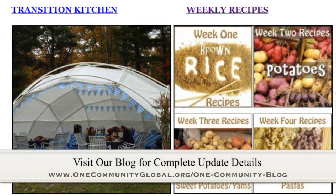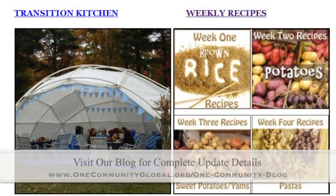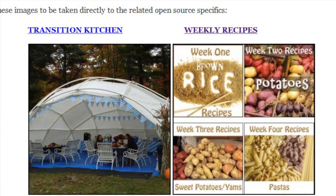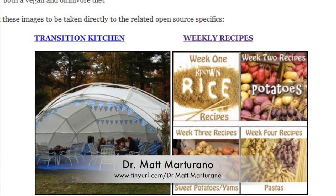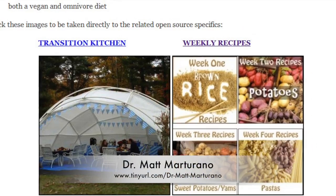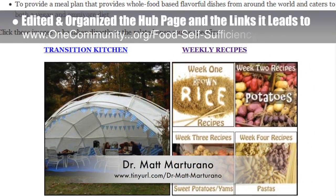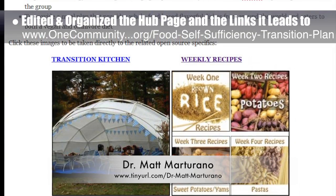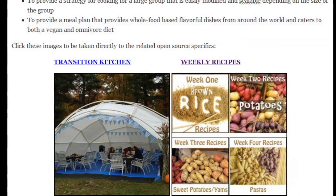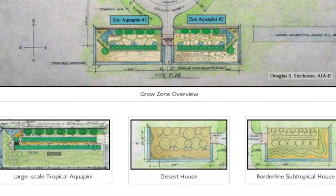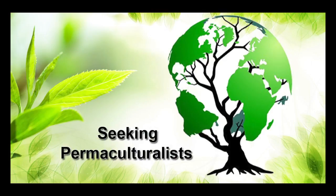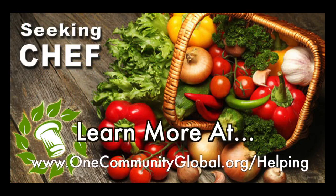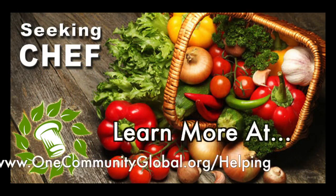This week, the core team completed another round of organizing the streamlined version of our food self-sufficiency transition plan page, which includes contributions by naturopathic doctor Matt Martirano, creator of the coherent model for comprehensive digestive health. We did fine-tuned editing, proofreading, and organized the hub page and the links it leads to — now approximately 96% complete. In this area we are seeking permaculturalists, an irrigation specialist, a surveyor, and a chef to join our team as either consultants or pioneers moving onto the property with us.